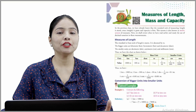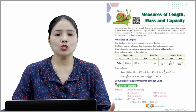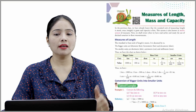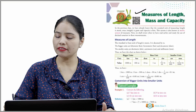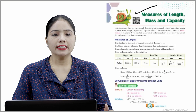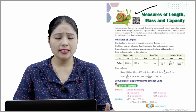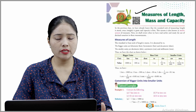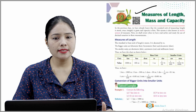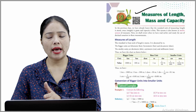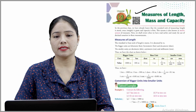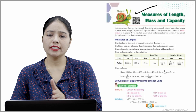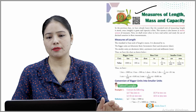Hello children, how are you all? I hope you all are doing well. Today in this class we are going to learn about measures of length, mass and capacity. In the previous class we have already learnt that the standard unit of measuring length is meter, mass means weight is gram, and capacity is litre. This system is also known as the metric system of measures. Now we shall review what we have read earlier and study the use of decimal notations in these measurements.